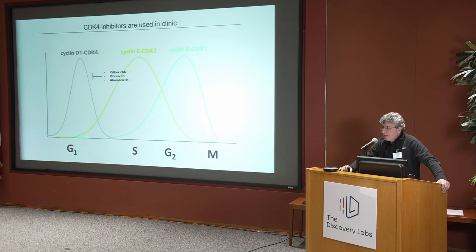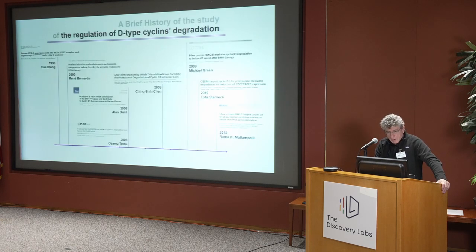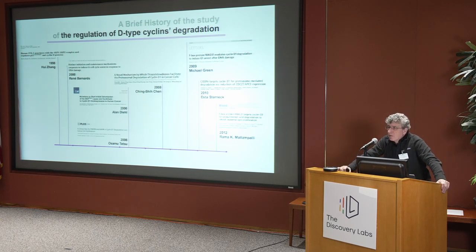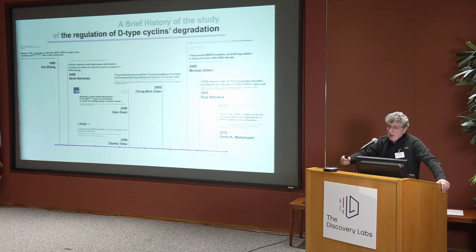There are inhibitors of this kinase and they are used in the clinic, particularly in breast cancer. Because of the importance of cyclin D1, many labs along the years have asked: what is the system? How are cyclin D1, as well as the parallel cyclin D2 and D3, degraded during the cell cycle? By which mechanism? By which ubiquitin ligases?